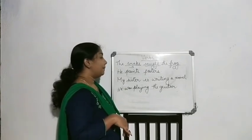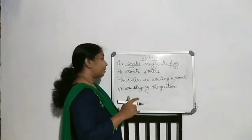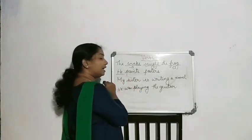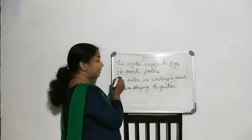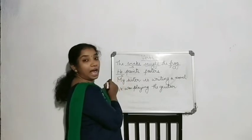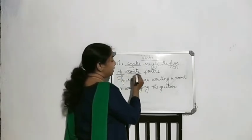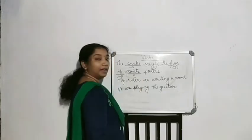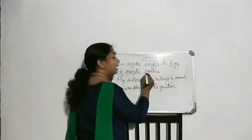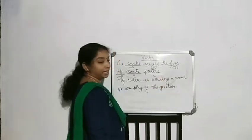Next sentence: 'He paints posters.' Here, he is the subject — he is performing the action. What is the action taking place? Paints — that is the verb. And posters is the object.